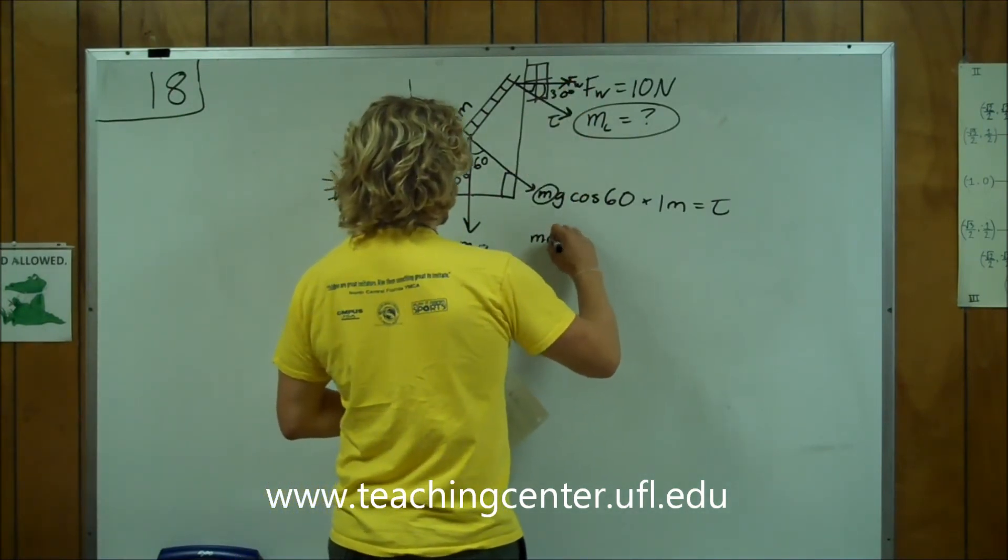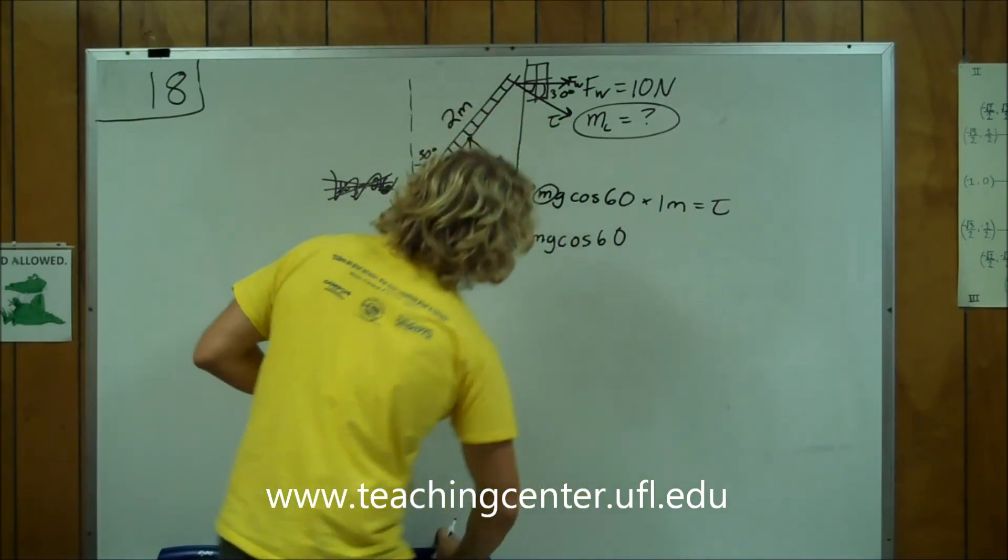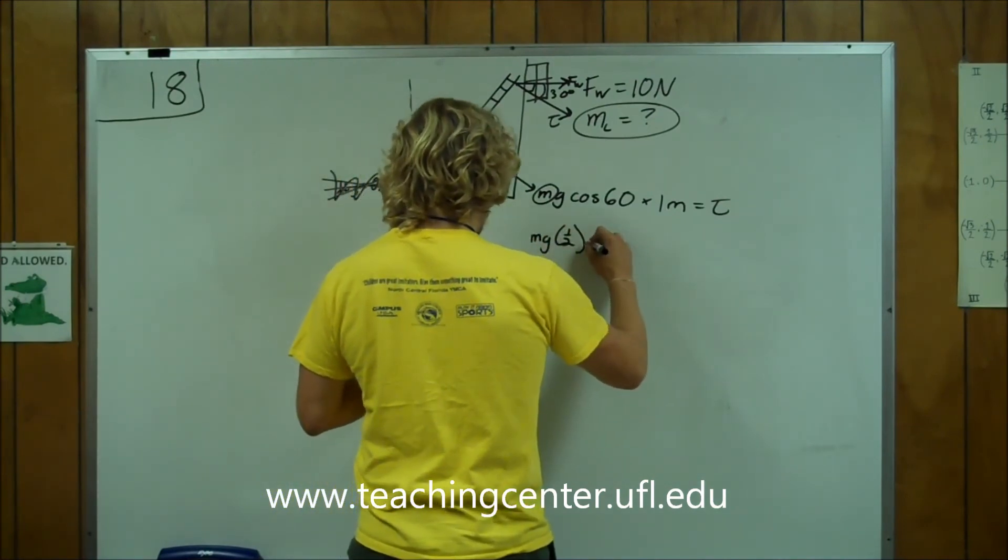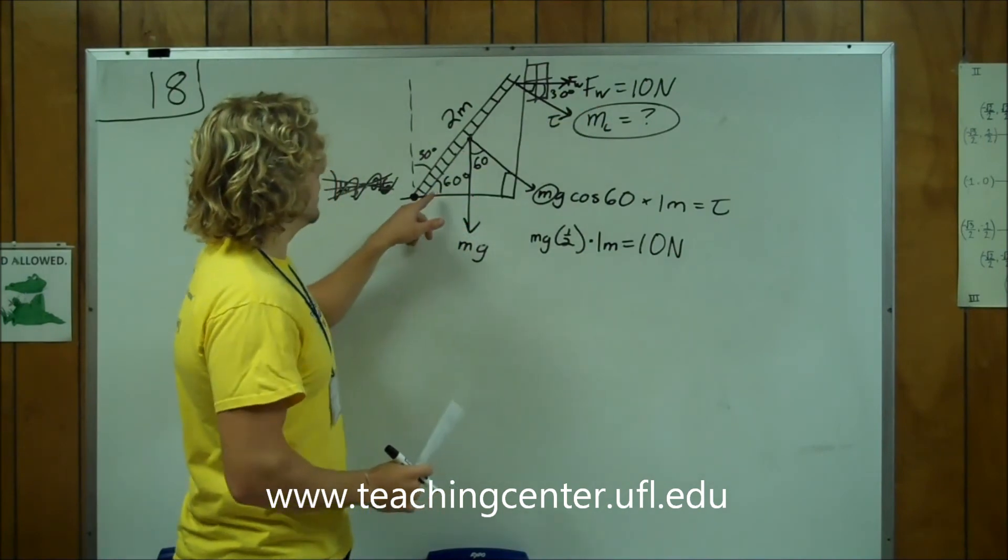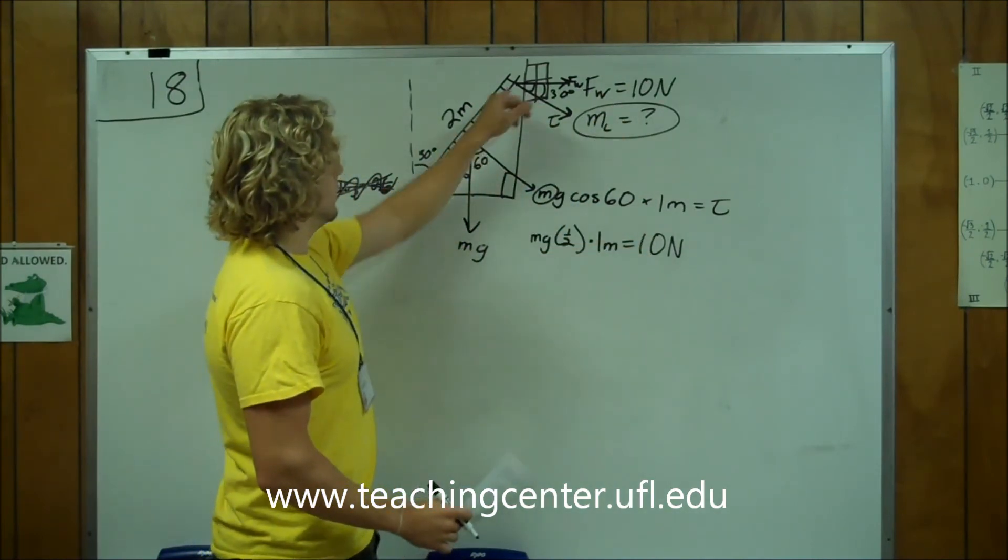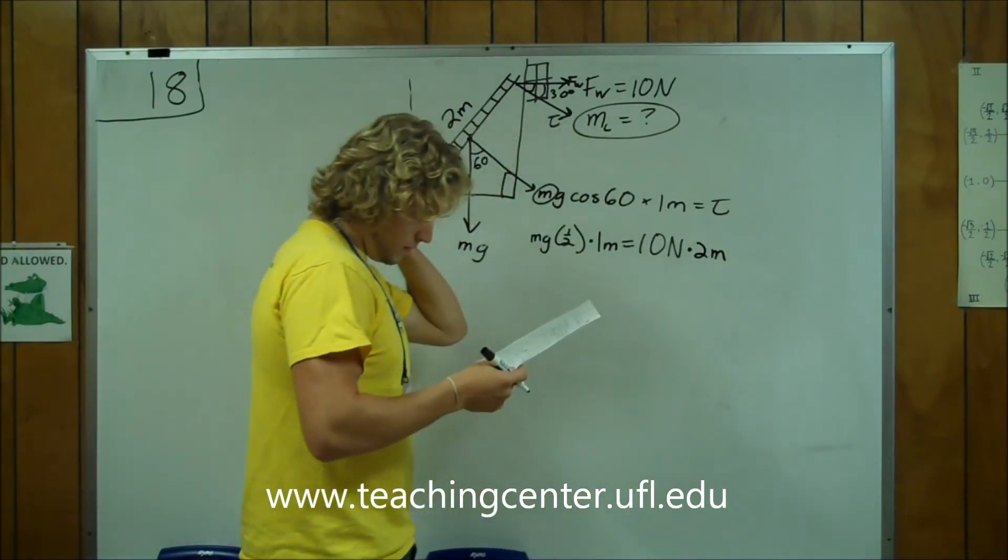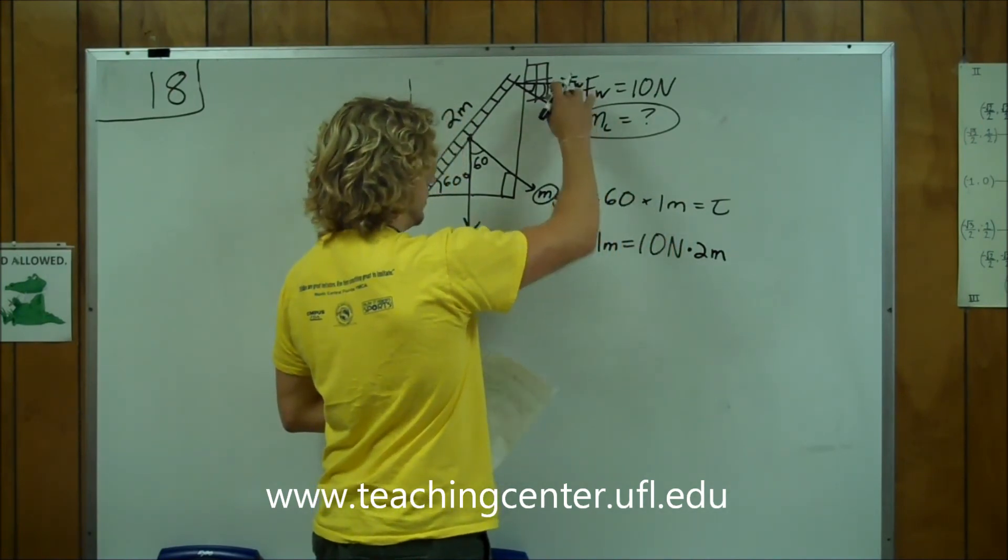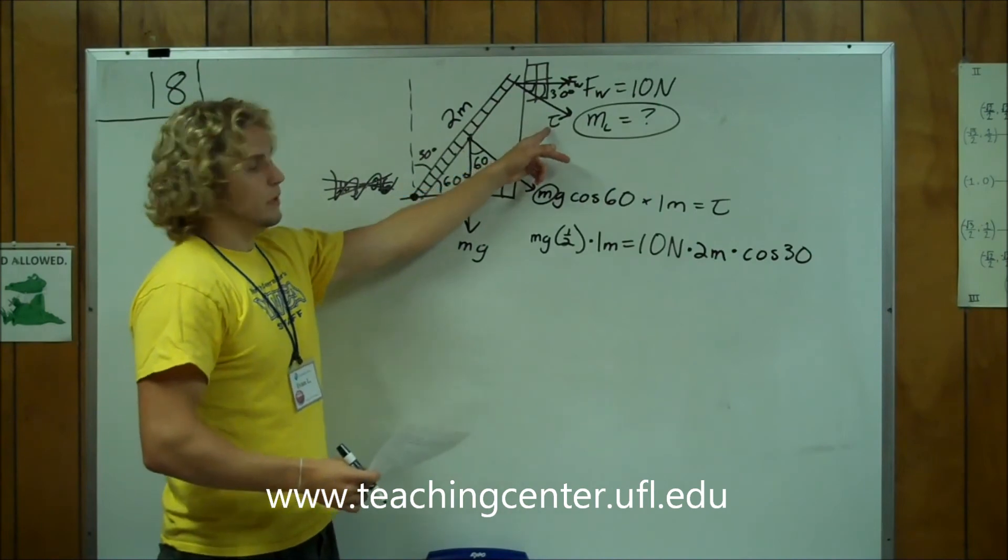So, we have mg cosine of 60, which is, cosine of 60 is one half. So, we have mg times one half times one meter is equal to 10 newtons. That's the force. Alright? And then, the torque that's created by that, the maximum amount of force that it's able to handle is, the torque is found by multiplying that force by 2 meters times 2 meters. And then, we have to multiply it. This force is multiplied by cosine of 30, so that we understand that.